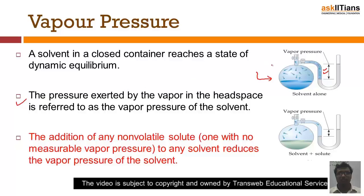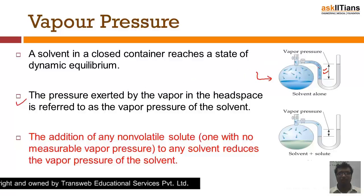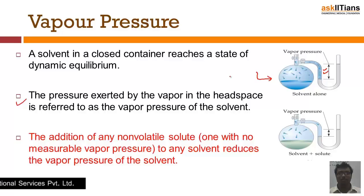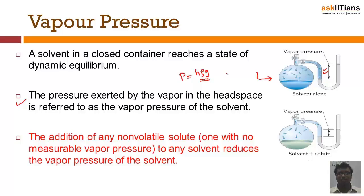So vapor pressure is the pressure exerted by the vapor in the headspace. This headspace occupies a certain height, and if you multiply density into g you will get the pressure exerted inside the headspace. Another important point is that every solvent in a closed container reaches a state of dynamic equilibrium, as shown in this figure.